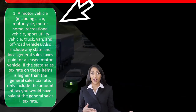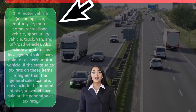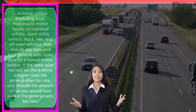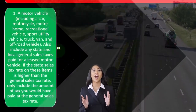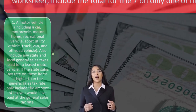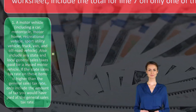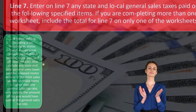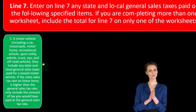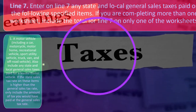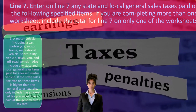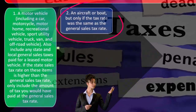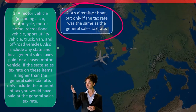Specified items for line seven include: first, a motor vehicle — including a car, motorcycle, motor home, recreational vehicle, sport utility vehicle, truck, van, or off-road vehicle. Obviously a larger purchase like that means more sales tax applied to it. Also include any state and local general sales tax paid for a leased motor vehicle. If the state sales tax rate on these items is higher than the general sales tax rate, only include the amount of tax you would have paid at the general sales tax rate. Second, an aircraft or a boat, but only if the tax rate was the same as the general sales tax rate.